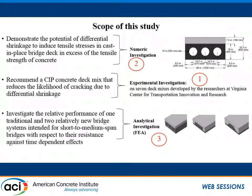The scope of this study is to demonstrate the potential for differential shrinkage to induce tensile stresses in the cast-in-place bridge deck in excess of the tensile strength of the concrete, and to recommend a deck mix that reduces the likelihood of cracking due to differential shrinkage. The first goal was addressed through a numeric investigation using a voided slab system as an example. The second goal was addressed through an experimental investigation on seven deck mixes developed by researchers at the Virginia Center for Transportation Innovation Research. The third part investigated the relative performance of one traditional and two relatively new bridge systems for short to medium span bridges using finite element analysis.